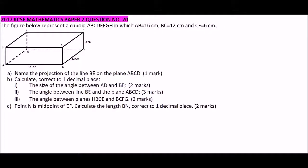So, KCHC mathematics paper 2, question number 20. The figure below represents a cuboid ABCDEFGH in which AB is equal to 16, BC is equal to 12, and CF is equal to 6. So we have been given those dimensions.